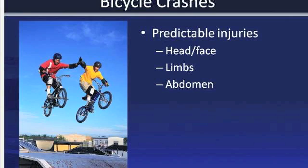When we talk about bicycle crashes, most severe and fatal bicycle injuries involve head trauma. Other injuries associated with bicycle crashes include trauma to the face, limbs, and abdomen, usually from striking the handlebars. Most common bicycle crashes include riding into a street without stopping, turning left or swerving into traffic coming from behind, running a stop sign, or riding against the flow of traffic.